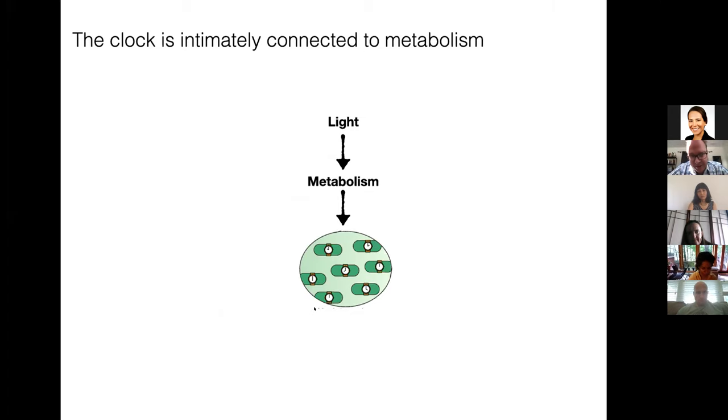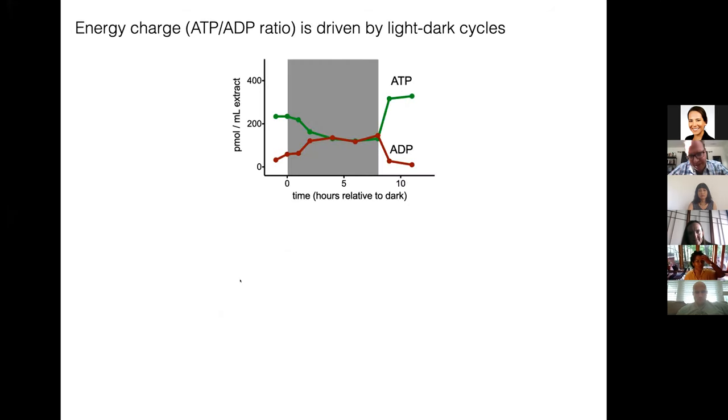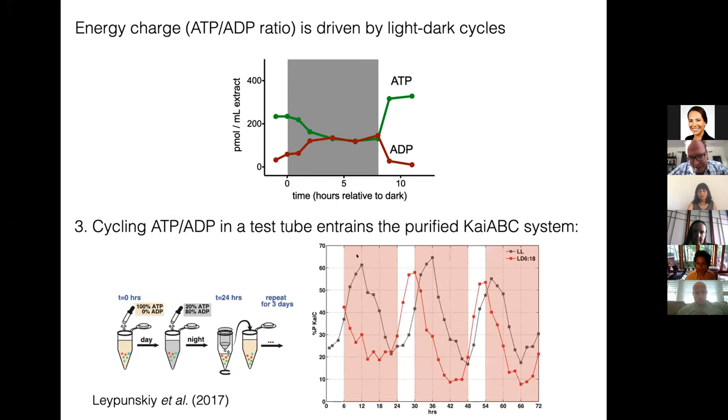And the third criteria is that it's supposed to be entrainable to light-dark cycles. Well, these proteins don't sense light themselves, but one of the major themes my lab has been working on is that this oscillator is intimately connected to metabolism. So it turns out when you put these cyanobacteria into the dark, the ratio between ATP and ADP, so a measure of the available biochemical energy, falls. And if you recapitulate those kind of cycles in this test tube reaction, switching from high ATP-ADP ratio to low, you can synchronize the phosphorylation rhythm to this driving force.